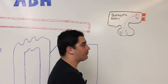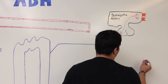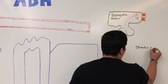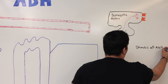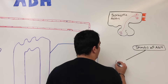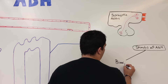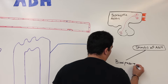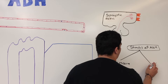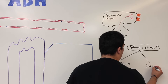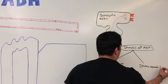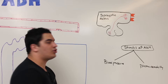What are those stimuli? There are mainly two different stimuli for ADH. One stimulus is going to be blood pressure, and the other stimulus is going to be plasma osmolality. These are the two stimuli.